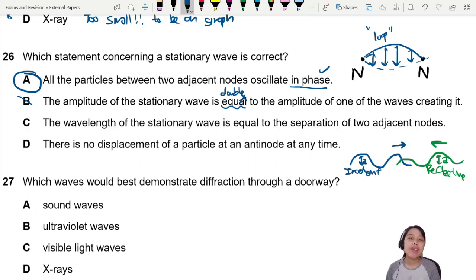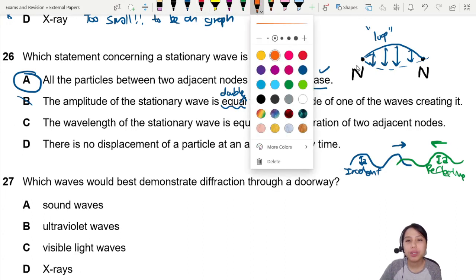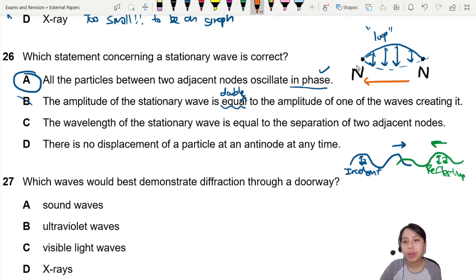C. Wavelength is equal to separation of two adjacent nodes. Separation of two adjacent nodes refers to distance from here. Let's label it. Where are my colors? So distance, separation here. Is that wavelength? No. This is lambda over 2, half a wavelength. So nope, this wavelength is not correct. It's supposed to be lambda over 2.